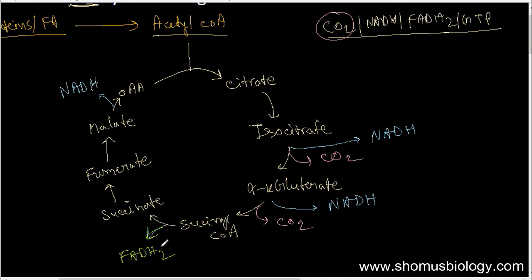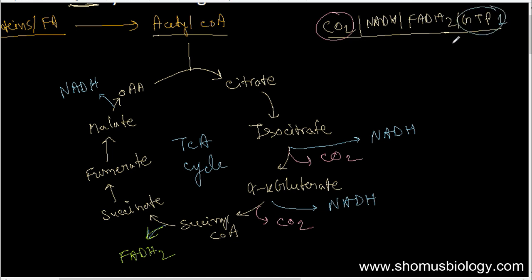So three NADH and one FADH2 molecules are produced per turn of the TCA cycle. Additionally, one molecule of GTP is produced — a single GTP, which is roughly equivalent to one molecule of ATP in terms of energy.